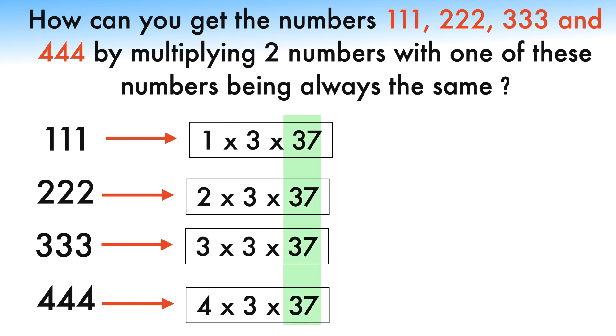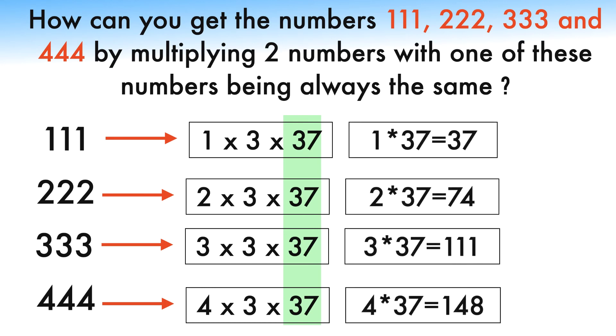In the first case, you are looking for a second number of 1 times 3, which is equal to 3. 2 times 3 equals 6. 3 times 3 equals 9. And 4 times 3 equals 12.